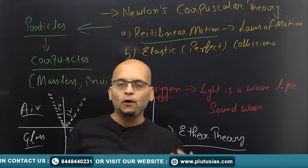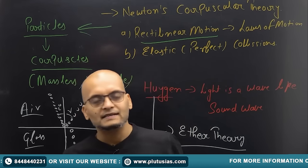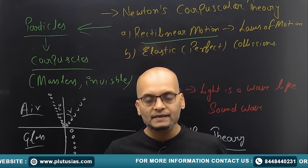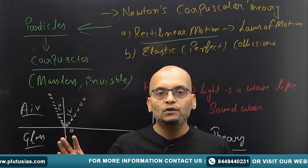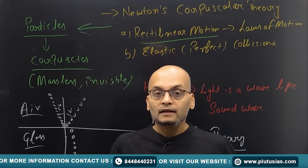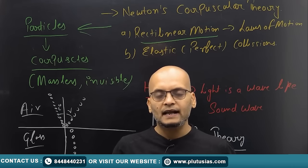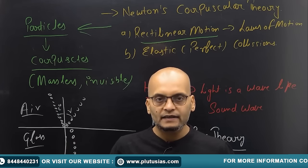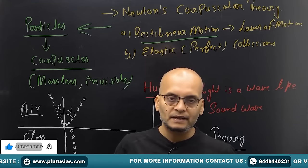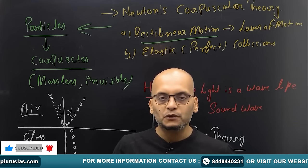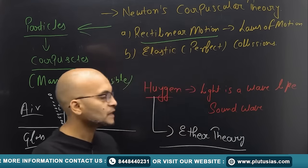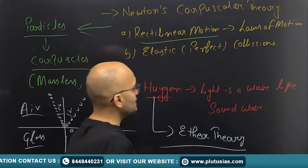All these things — the corpuscular theory and Huygens' wave theory that light travels like sound waves — were replaced when a new perception was opened. People observed and understood light in an entirely different way once Thomas Young did his experiment, popularly known as Young's Double Slit Experiment.